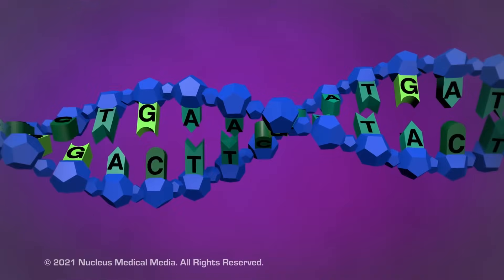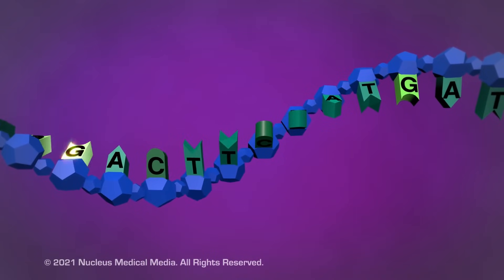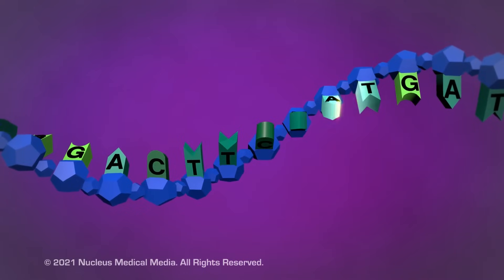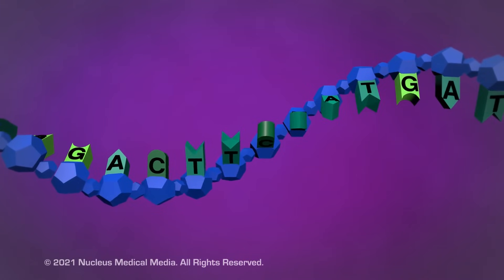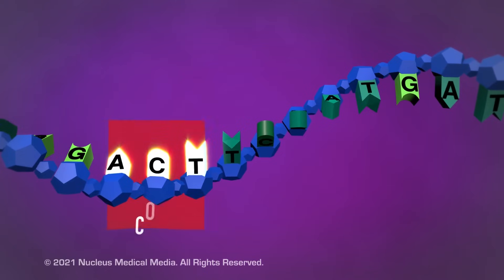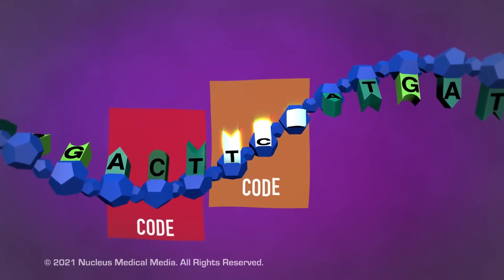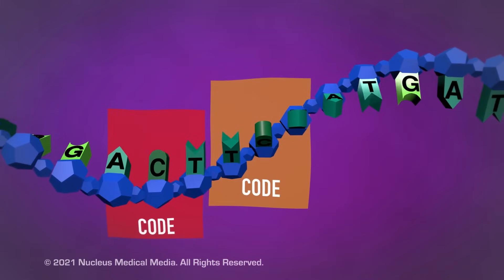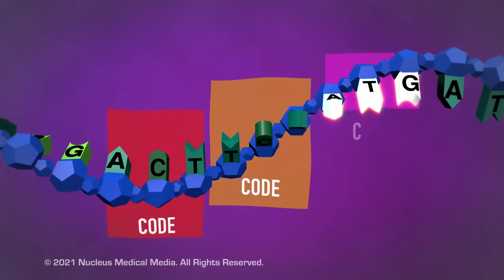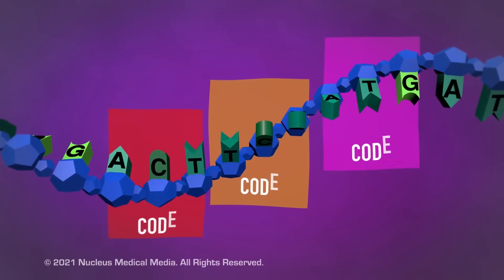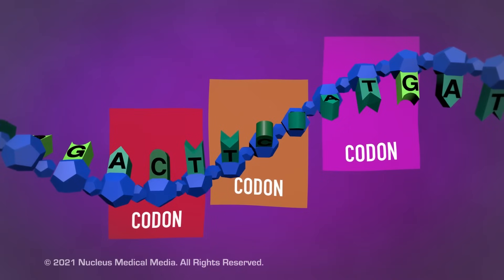And within a gene, the specific order of nitrogenous bases dictates the order of amino acids that will make up the protein. Each group of three consecutive bases in the gene is actually a code for a particular amino acid. As a result, each group is referred to as a codon.